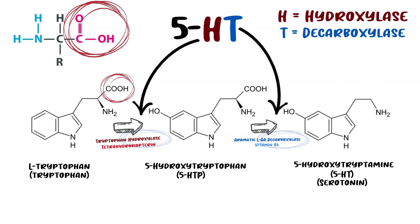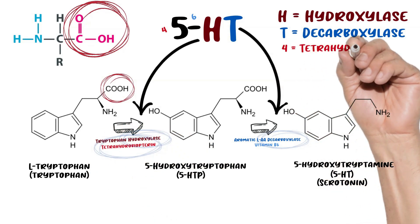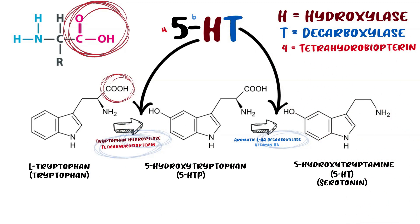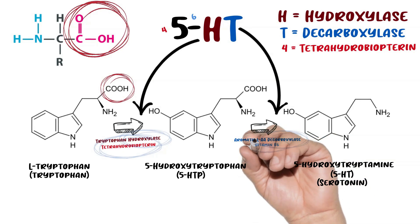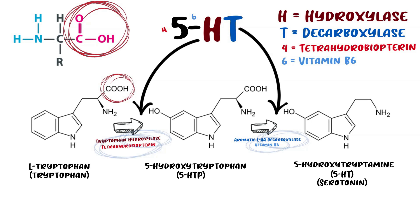Now for the cofactors: we know the H and the T, so now we use the '5' to represent the cofactors. Think of the sequence four-five-six. The '4' comes first and stands for 'tetra' — tetrahydrobiopterin is the cofactor for tryptophan hydroxylase. The '6' is the cofactor for the second enzyme — vitamin B6. This mnemonic might seem far out there, but it works.